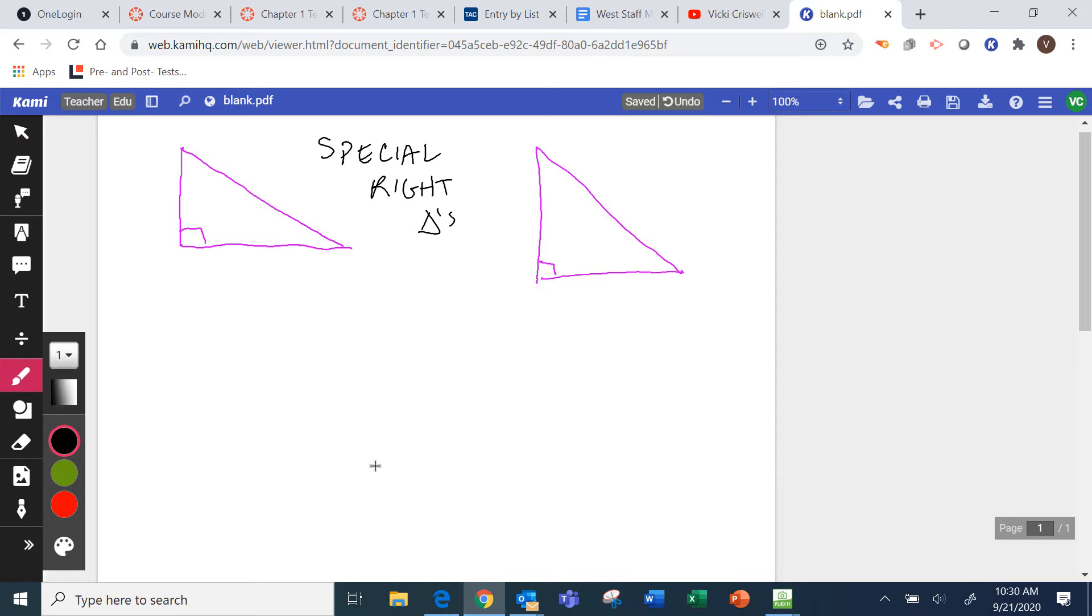The one on the right side is special because of this. Does anybody know what I just did? Isosceles. I made it isosceles, right? So this is an isosceles right triangle.